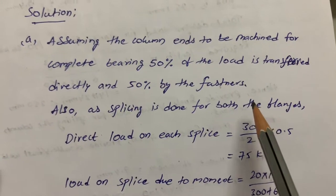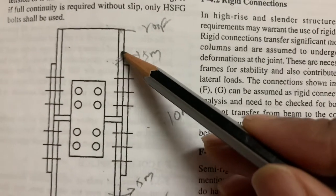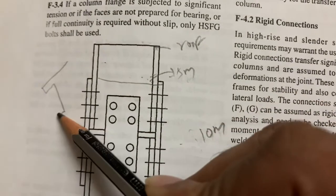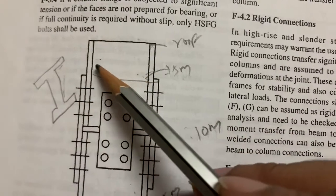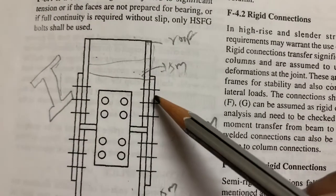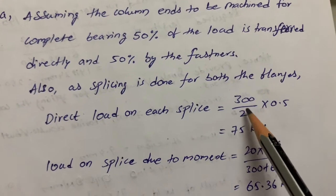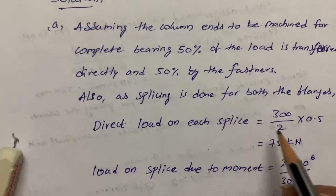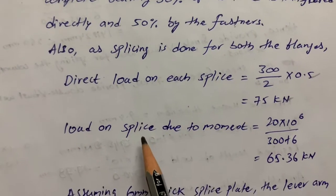Splicing is done on both flanges. The I-section column has a flange portion and a web portion, and we connect the splice plate to the flange portion. The direct load on splice is 50% of the axial load: 300 / 2 = 150 kN × 0.5 = 75 kN.